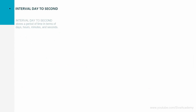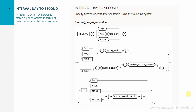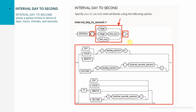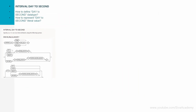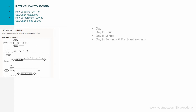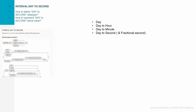Now let us see how to represent a literal value in terms of interval day to second. The syntax is: the keyword interval followed by a single-quoted duration value, followed by the format keyword. The interval can be represented in multiple ways: day, day to hour, day to minute, or day to second. If our duration is less than a day, we can represent it in terms of hour, hour to minute, or hour to second. If the duration is even smaller, we can represent it as minute, minute to second, or simply second.